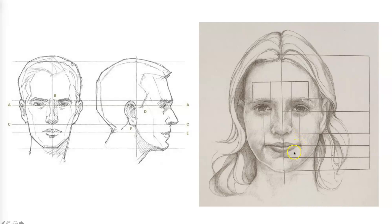It's important when analyzing the face to think about all the individual features. For example, where the brow line is — the brow line is situated a little bit above the eyes, and that's where the top of the ear will be aligned. The bottom of the nose will be where the bottom of the ear is aligned as well.